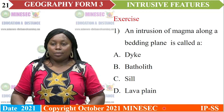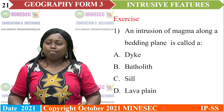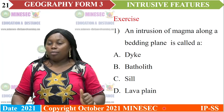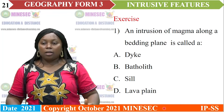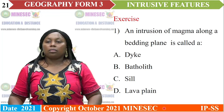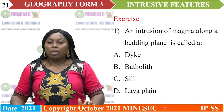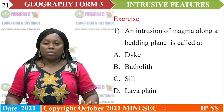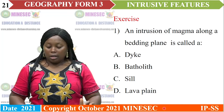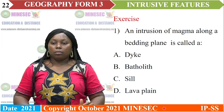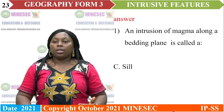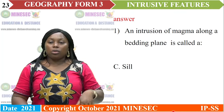Exercise question one: an intrusion of magma along a bedding plane is called: A) a dike, B) batholith, C) sill, D) lava plane. The right answer is C — a sill, because sills intrude along bedding planes of sedimentary rocks.